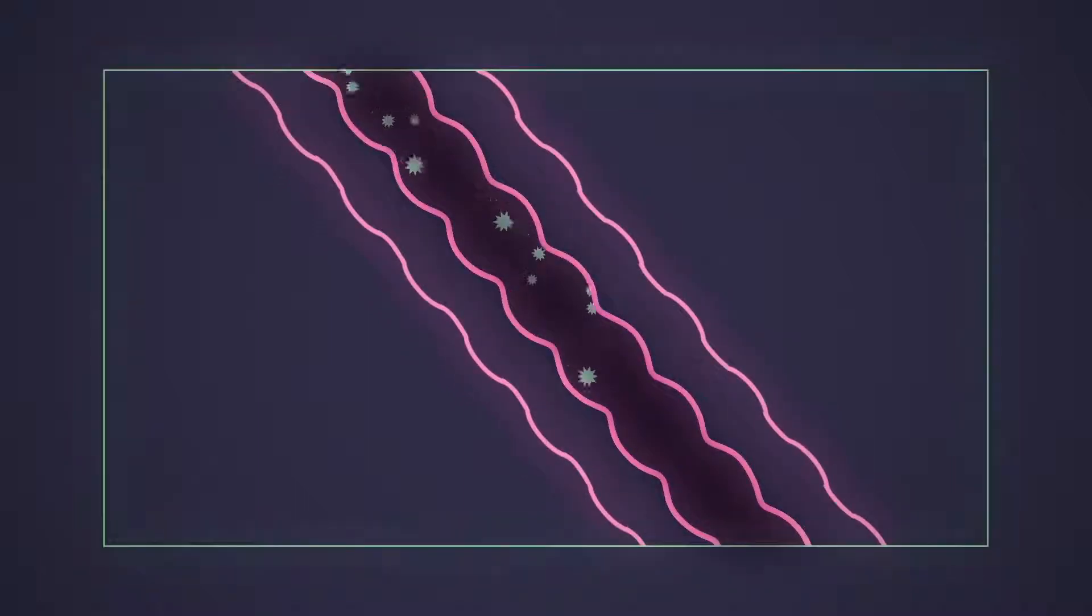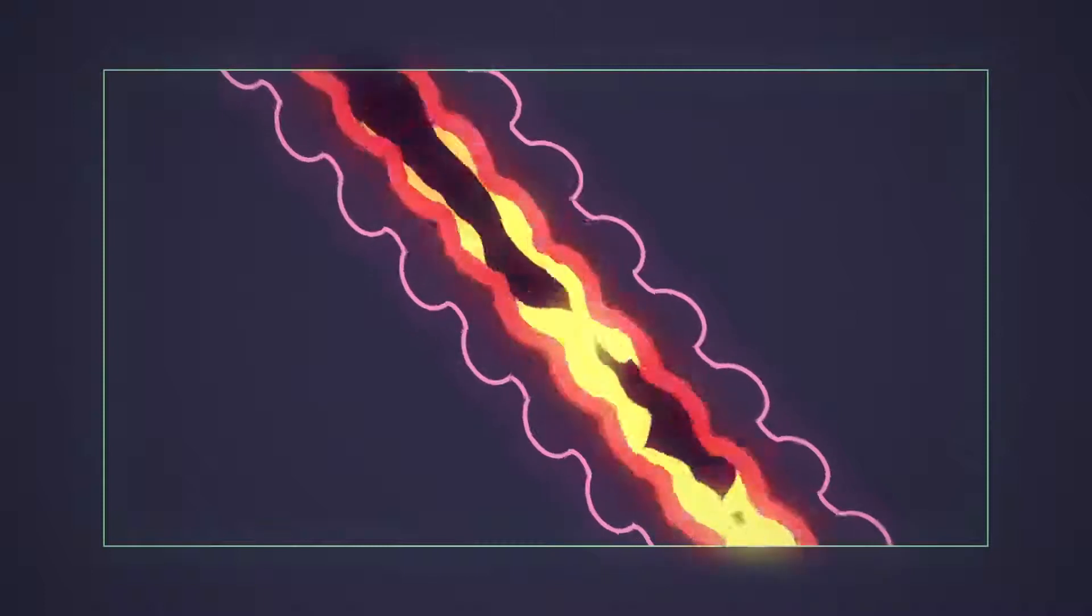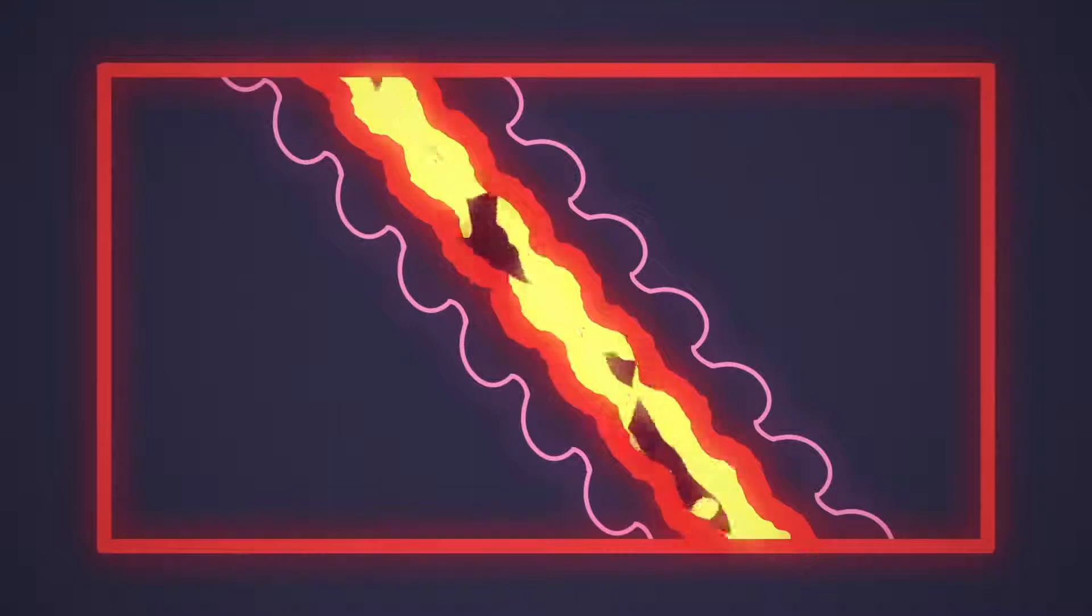Under normal conditions, the body uses this mucus to trap and clear particles, like pollen or dust. But during an asthma attack, it blocks the narrowed airways, making it even harder to breathe.